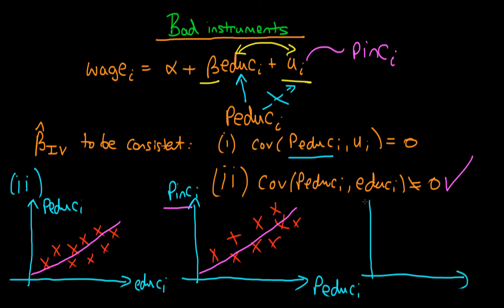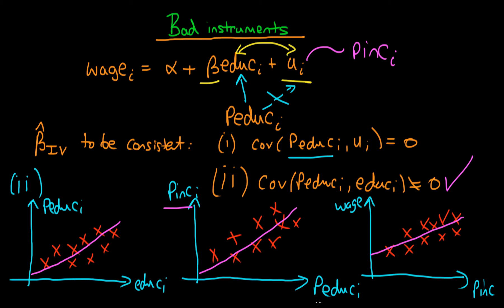It is likely that parental income actually affects an individual's level of wages. We expect a positive correlation between wages and parental income — perhaps a parent who earns more can afford to send their child to better quality schools, or more cynically, it's not what you know but who you know, so parents with high incomes might be better placed to help their children get better paid jobs. Both reasons suggest a positive correlation between wages and parental income, meaning parental income is contained within the error UI.